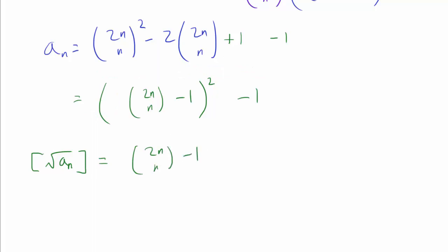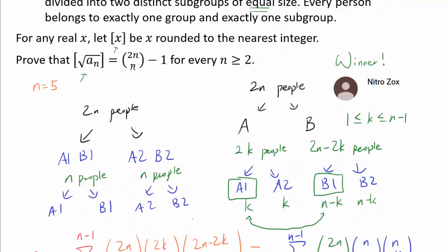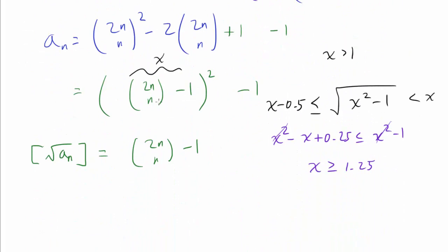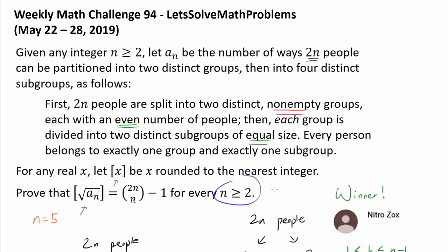To be more rigorous, let's prove that for x greater than 1, the square root of x squared minus 1 is greater than or equal to x minus 0.5, so that rounding gives x. Squaring both sides, this inequality holds if x squared minus x plus 0.25 is less than or equal to x squared minus 1, which simplifies to x greater than or equal to 1.25. For n greater than or equal to 2, C(2n, n) minus 1 is more than 1.25. Therefore ⌊√(a_n)⌋ always equals C(2n, n) minus 1, and we are done.